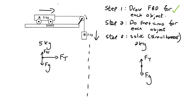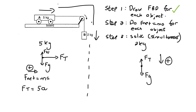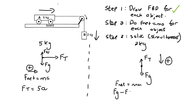Step two: we use F_net equals ma for each object. For the five kilogram object, I say to the right is positive. The only force in the horizontal direction is FT, so FT equals 5 times a. For the two kilogram object, I choose downwards as positive because the system is moving that way. So FG is positive and FT is pointing up, so it's negative — giving FG minus FT equals 2a. Be careful: many learners say FT minus FG, which gives the completely wrong answer.